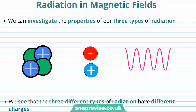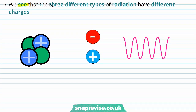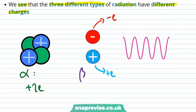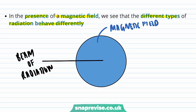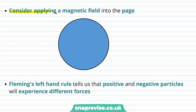We're now going to think about what happens to these three types of radiation — alpha, beta, and gamma — in magnetic fields. The three different types of radiation have different charges: alpha radiation has a charge of plus 2e; beta radiation can be negative with a charge of minus e or positive with a charge of plus e; and gamma radiation is uncharged. Let's consider applying a magnetic field into the page.